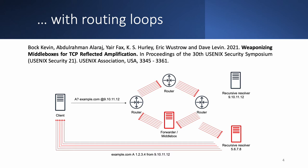The setup from the previous slide can become dangerous if the middle box is located inside a routing loop. Here the same client asks recursive resolver 9.10.11.12 to look up the A records of example.com. Once again, the query is intercepted by the middle box and forwarded to alternative resolver 5.6.7.8. Because of the routing loop, the middle box keeps receiving and forwarding the same request. As a consequence, the alternative resolver keeps sending spoofed responses. The packet may be dropped if there is random packet loss or a router reboot. If not, the TTL of the initial request gradually comes down to zero. In the worst case, if the TTL is not decreased, such a request loops infinitely.